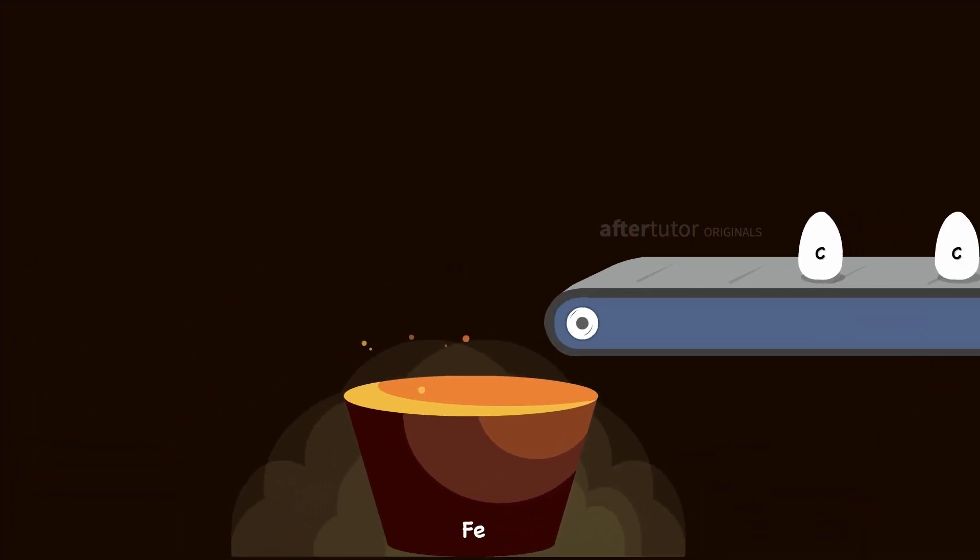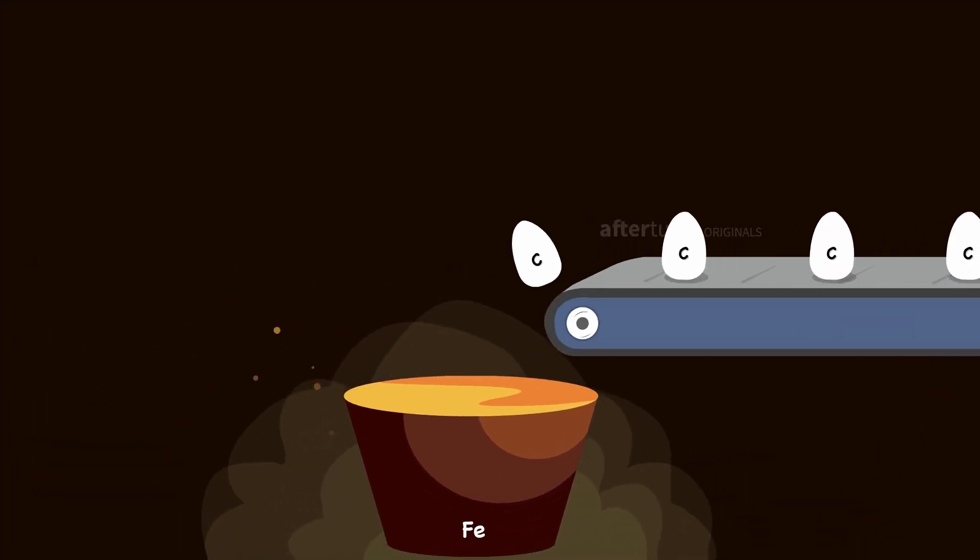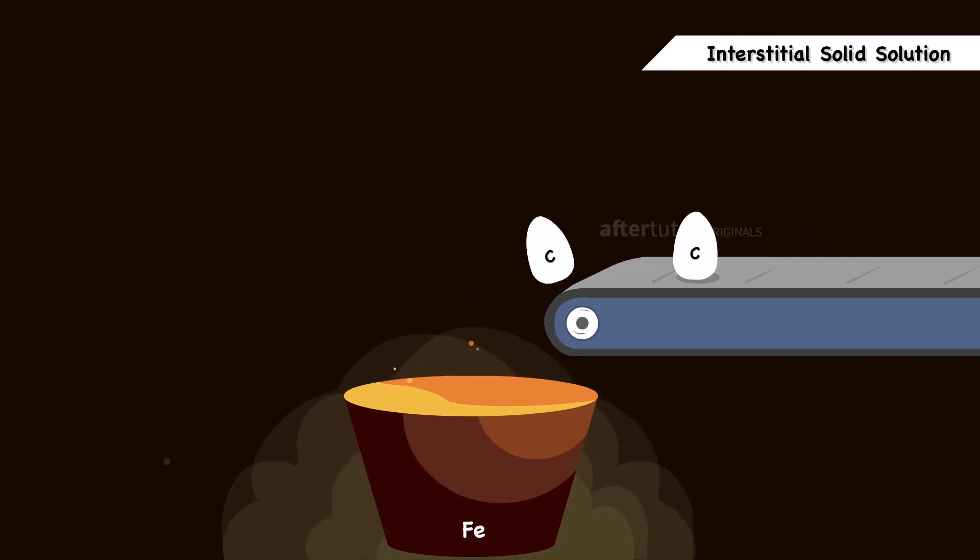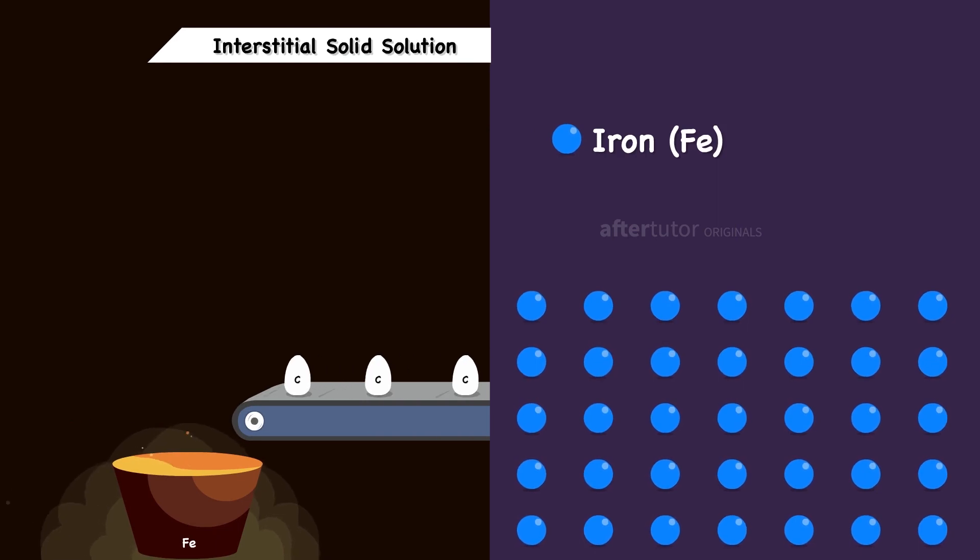We all know that steel is obtained by mixing carbon with iron, nothing but the interstitial solid solution type, where the solute atoms occupy the interstitial positions in the crystal structure.